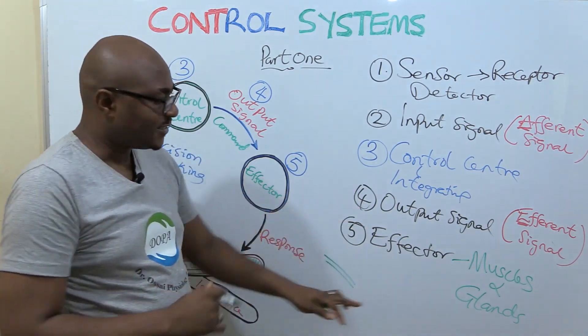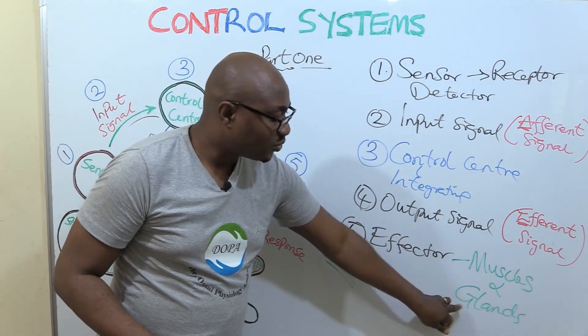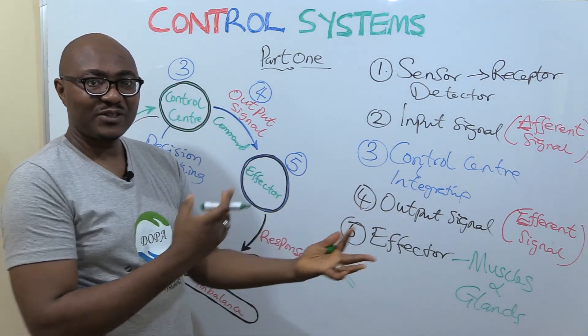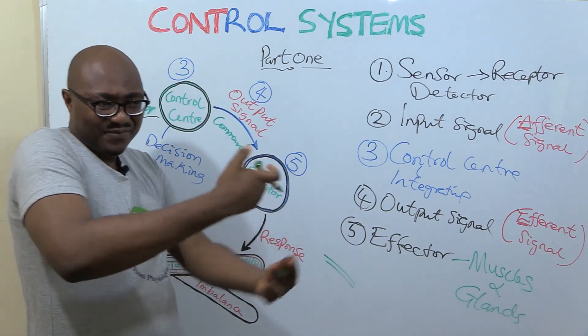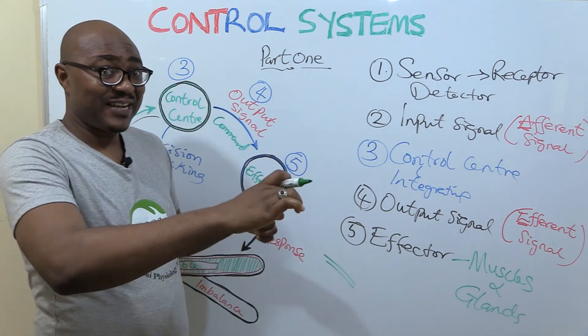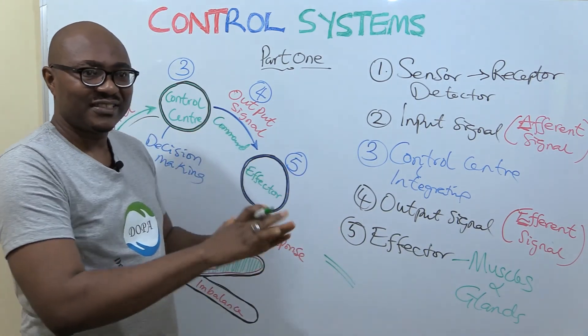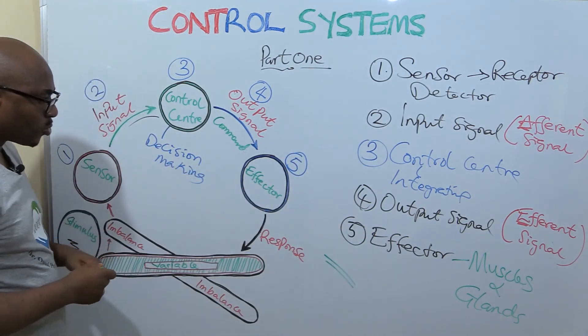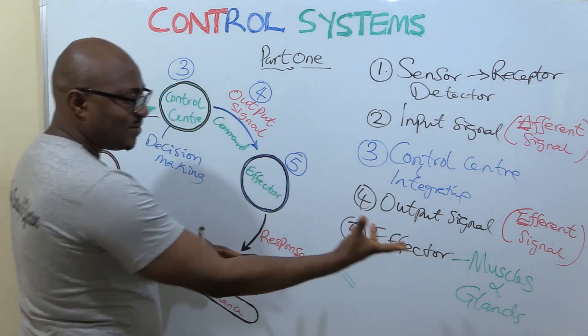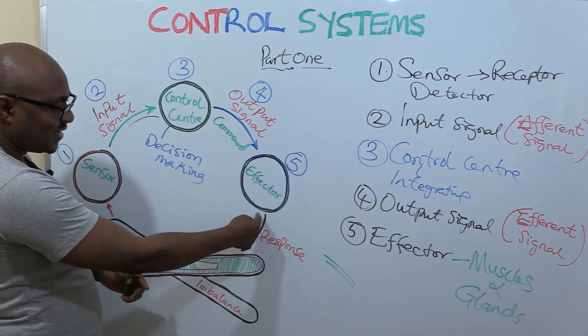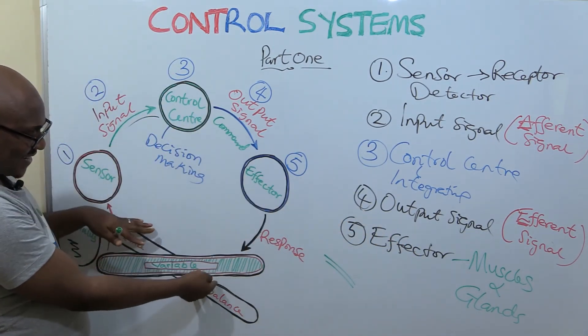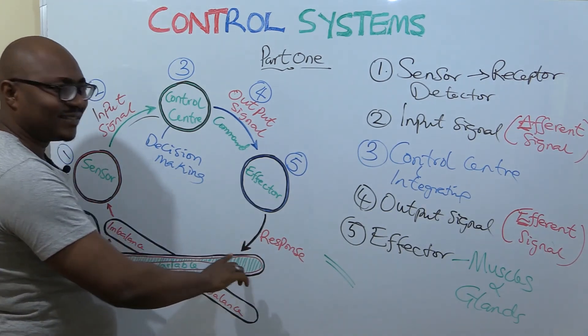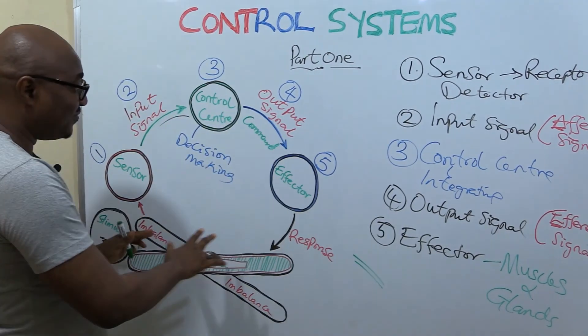with affecting a change - through muscles, and through glands, which are organs that secrete chemical substances that influence chemical reactions. You know that chemical reactions are the basis of physiological function. So that's what effectors do. When the effector implements this command, it leads to a response and now brings it back to balance. So this is the overview